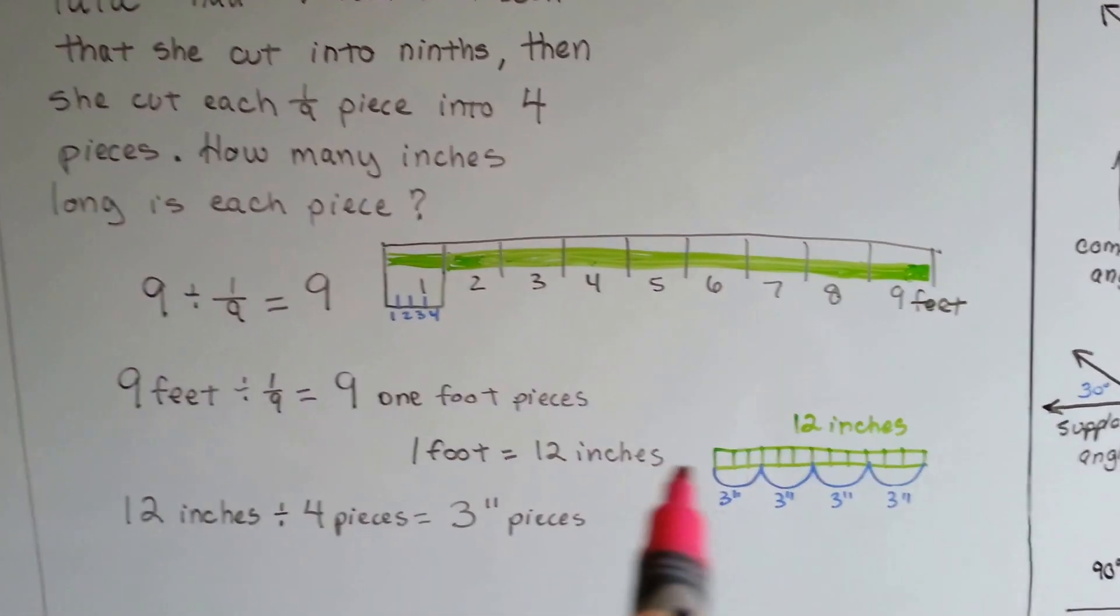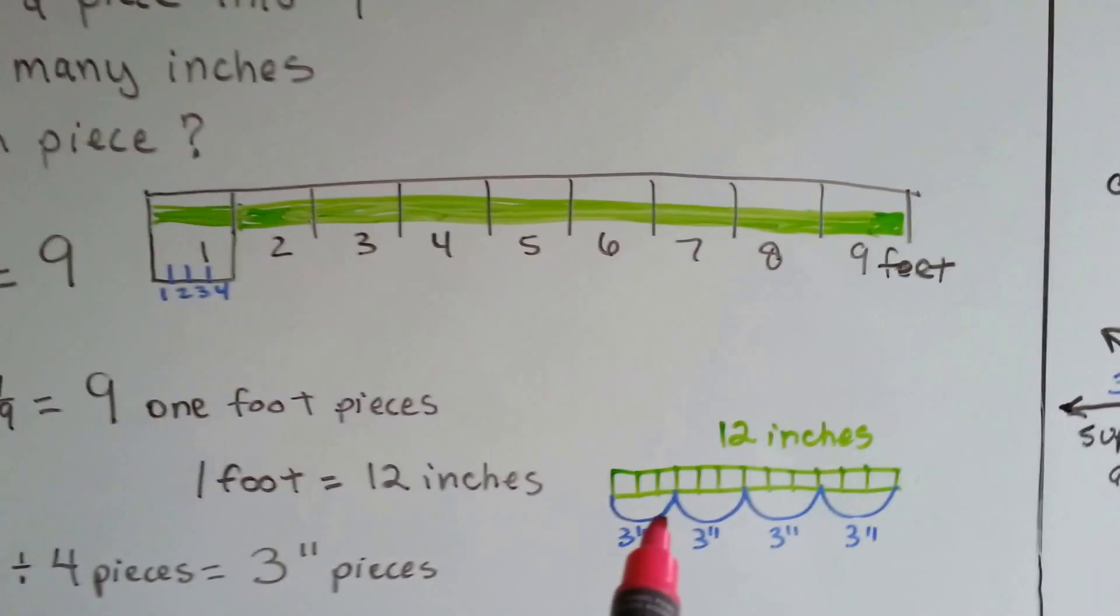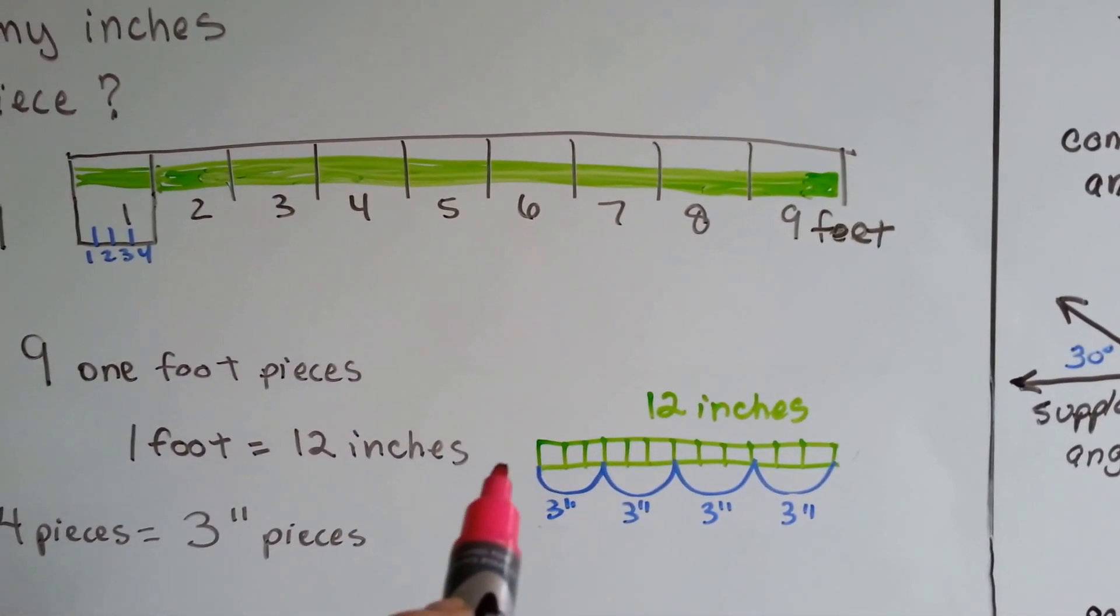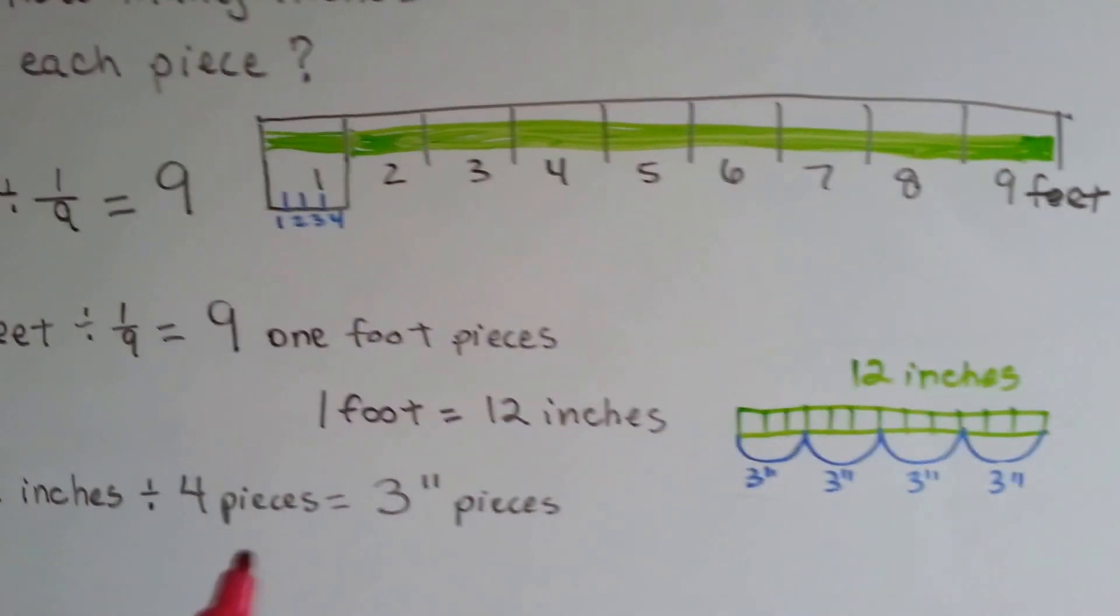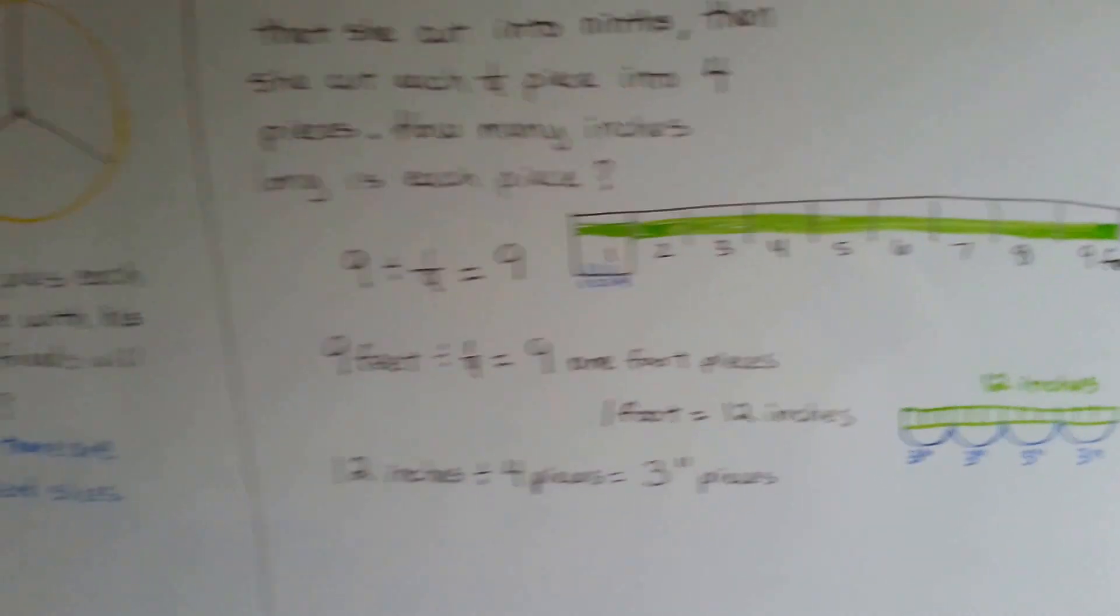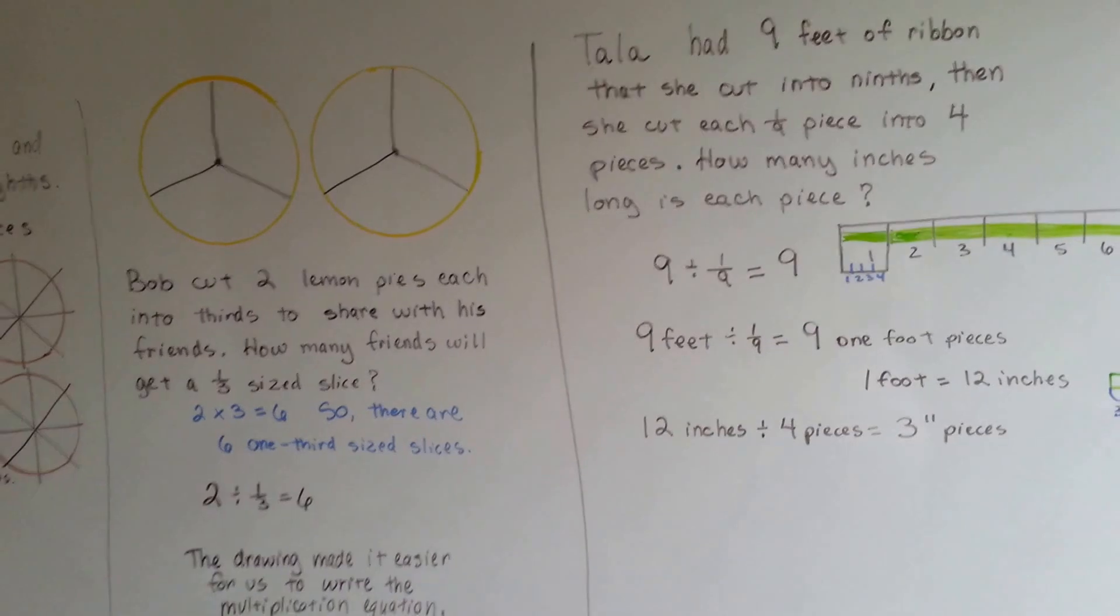We know there's twelve inches in a foot. So if she cut each of them into four pieces, three times four is twelve. So there's three inches each. Each piece of ribbon is three inches long. See? So easy when you draw a diagram.